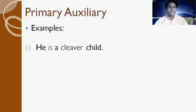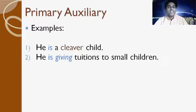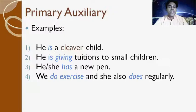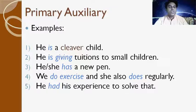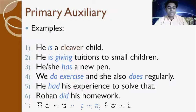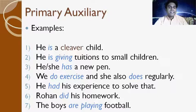Examples of primary auxiliary verbs: 'He is a clever child' — 'is' is the primary auxiliary. 'He is giving tuition' — 'is giving' is primary auxiliary. 'She has a new pen' — 'has' is primary auxiliary. 'We do exercise, she does regularly' — 'do' and 'does' are primary auxiliary. 'He had experience' — 'had' is primary auxiliary. 'Rohan did his homework' — 'did' is primary auxiliary. 'The boys are playing football' — 'are' is primary auxiliary.